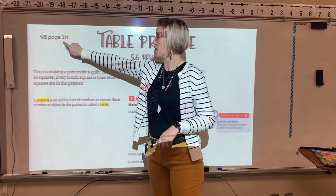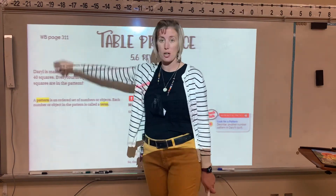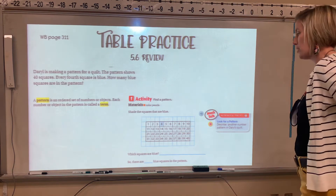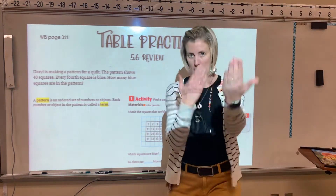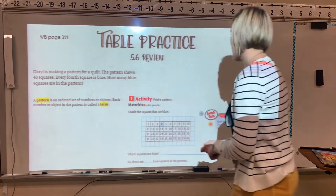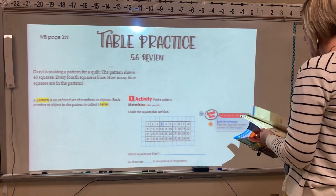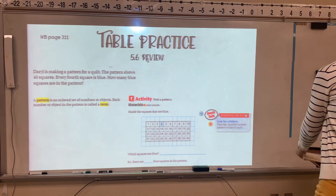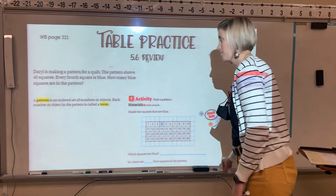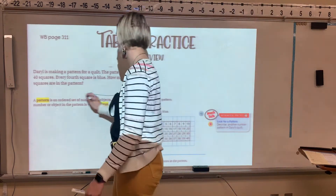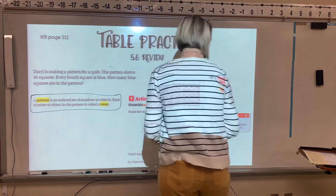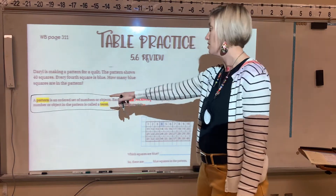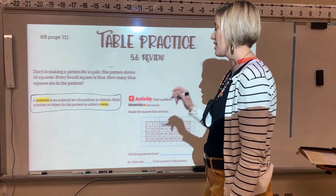We are in your GoMath 4th grade, Chapter 5 workbook, page 311. Daryl is making a pattern for a quilt. The pattern shows 40 squares. Every 4th square is blue — that's our pattern. How many blue squares are in the pattern? Our essential question is: how can you make and describe patterns?